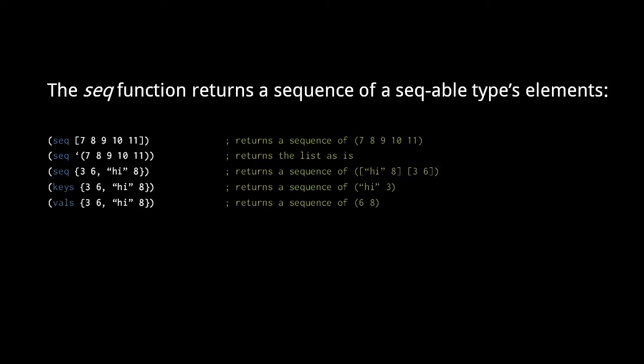We use the keys function, and if we want a sequence of just the values, we use the vals function. Be clear that items in a hash map have no defined order, so you shouldn't expect the items in the return sequences to be in any particular order.